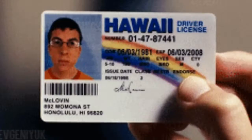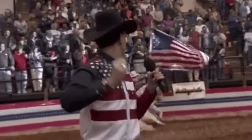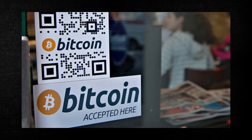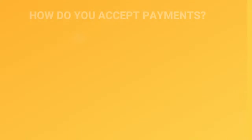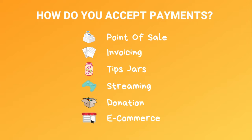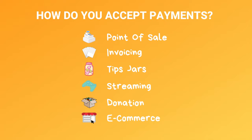You don't need a business license, you don't need an ID, you don't need to be in a specific country. It is the least headache payment system you will ever have. In order to set up Bitcoin as payment, we need to ask: how do you accept payments? Are you doing point of sale, in-person transactions, online tips, streaming, donations, or a full e-commerce setup? There are solutions for every one of those, and I'm going to go from the easiest setup to the most advanced.